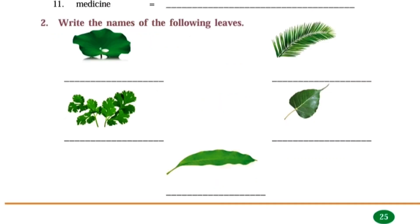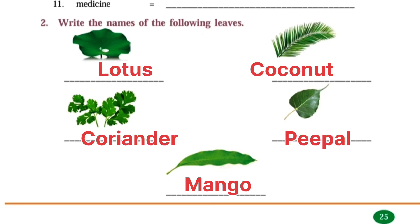And next: Write the names of the following leaves. First picture lotus, second picture coconut, and third one coriander. Next one peepal, last leaf mango.